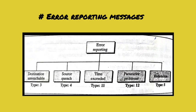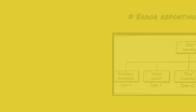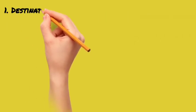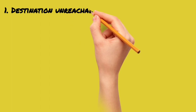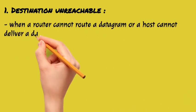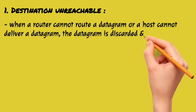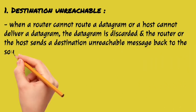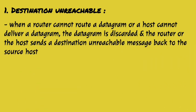The 5 types of error reporting messages are: destination unreachable, source quench, time exceeded, parameter problem, and redirection. For destination unreachable: when the router has to send a datagram to a host but doesn't know about the destination, it will discard the packet and send a destination unreachable message back to the source.